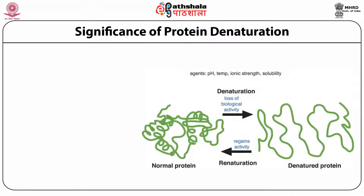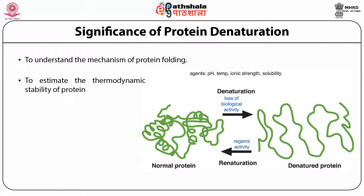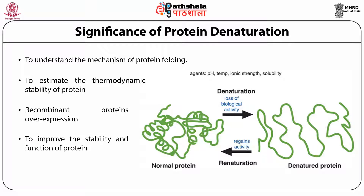Protein denaturation is significant because it helps us understand the mechanism of protein folding, estimate thermodynamic stability, solubilize overexpressed proteins, and improve protein stability and function. Under extreme conditions, a normal protein is converted into an unfolded denatured protein. This process is sometimes reversible — removing denaturing agents such as extreme pH, temperature, or ionic strength can allow renaturation to the normal protein.